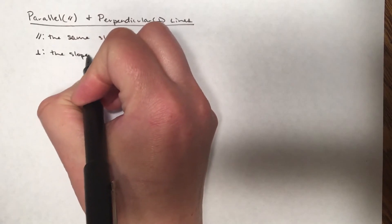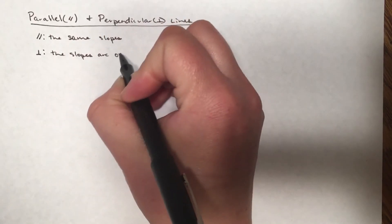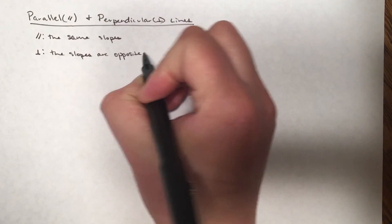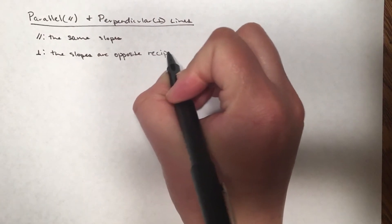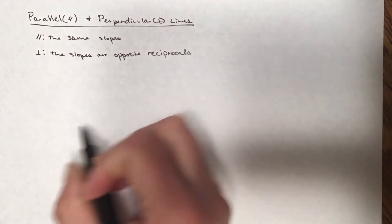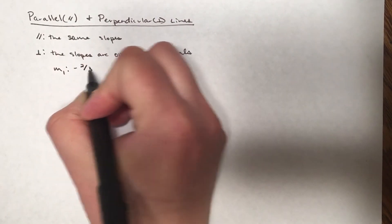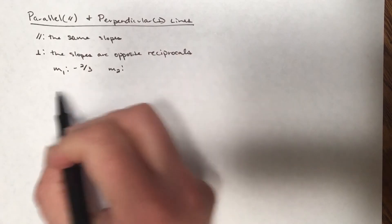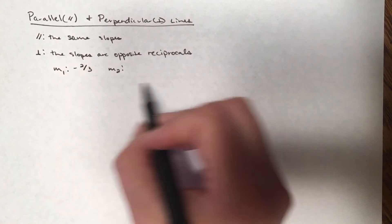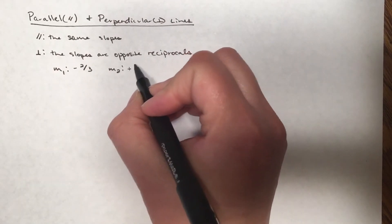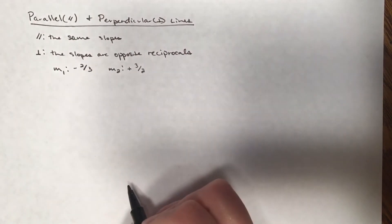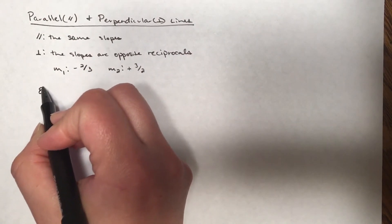The slopes are opposite reciprocals. Opposite means a sign change, reciprocals means flipping the fraction. So if m1 is negative two-thirds, the perpendicular slope m2 is going to be positive three over two.